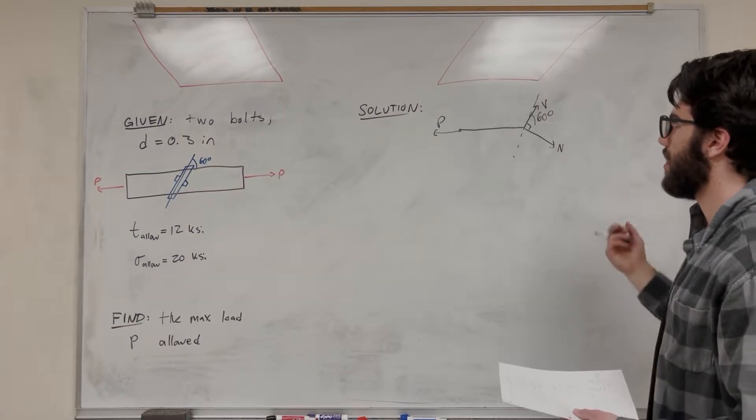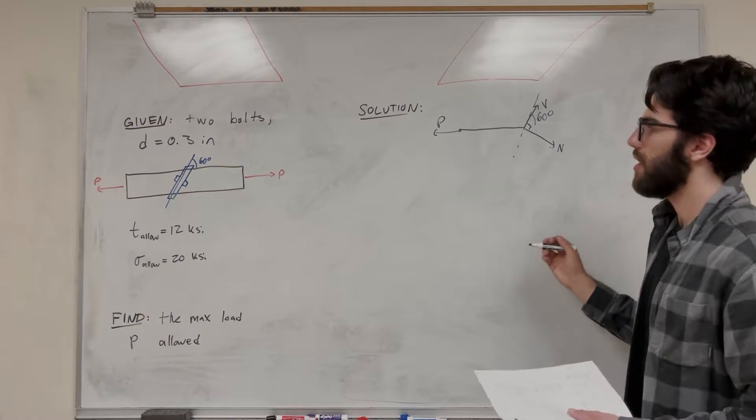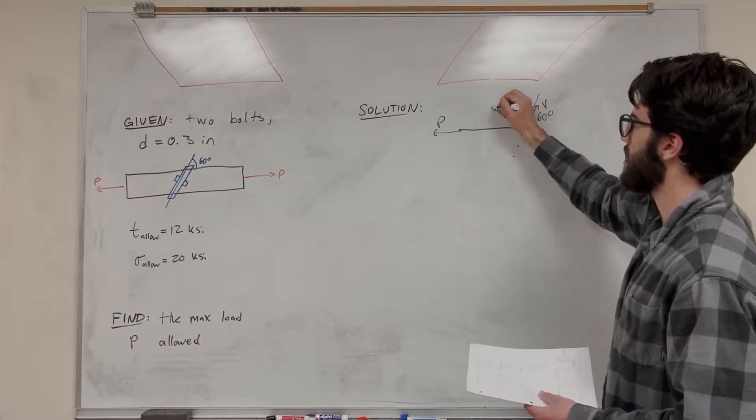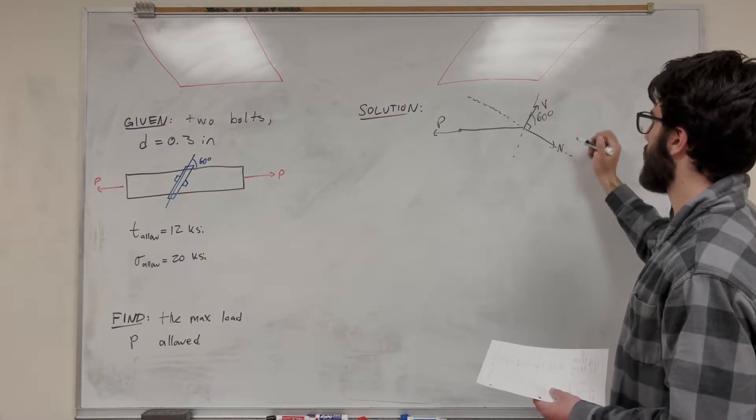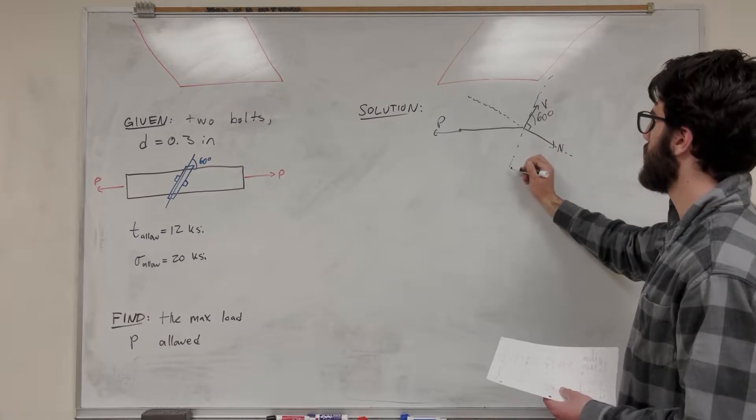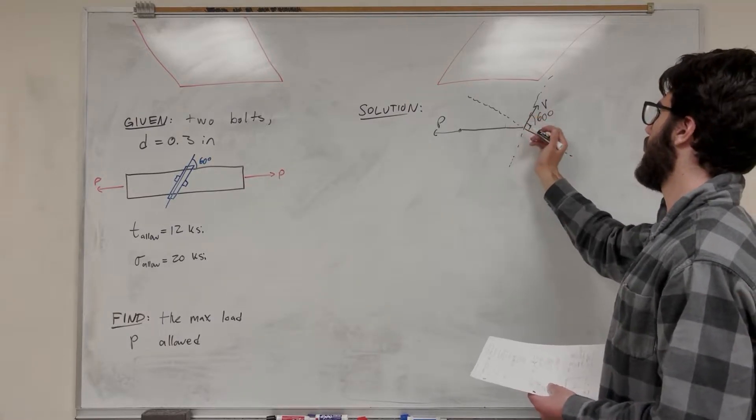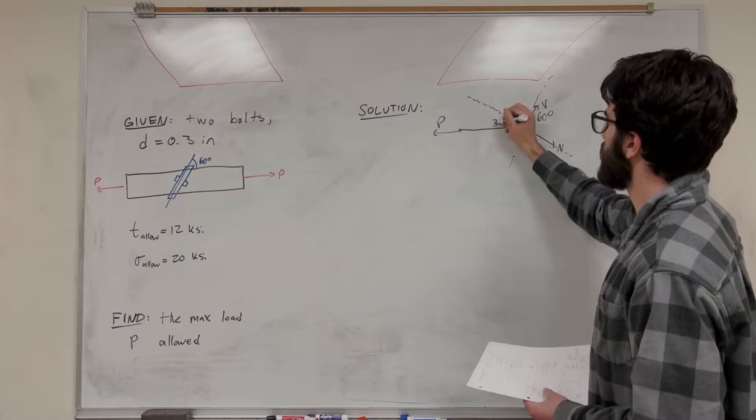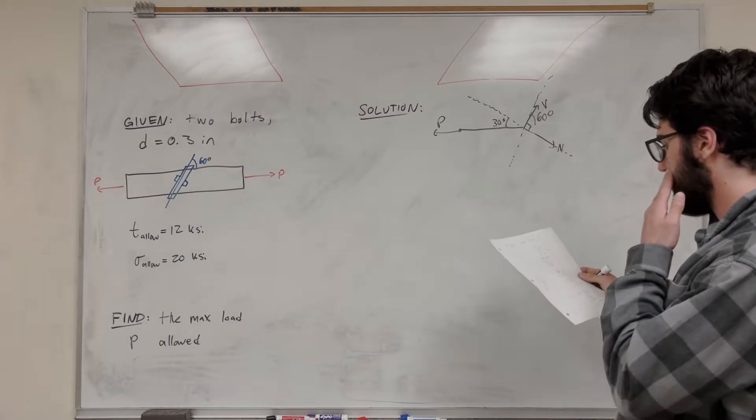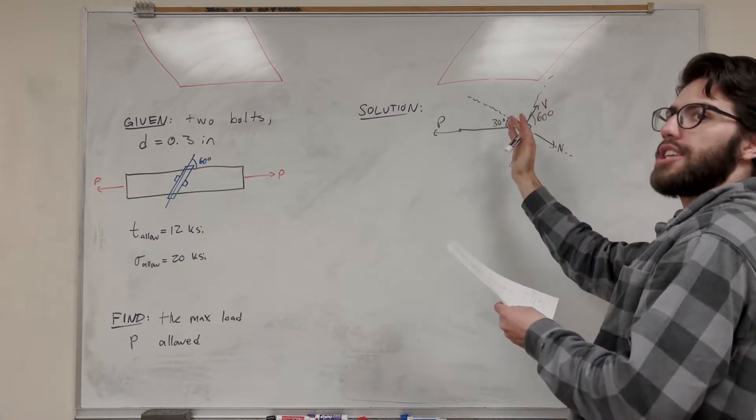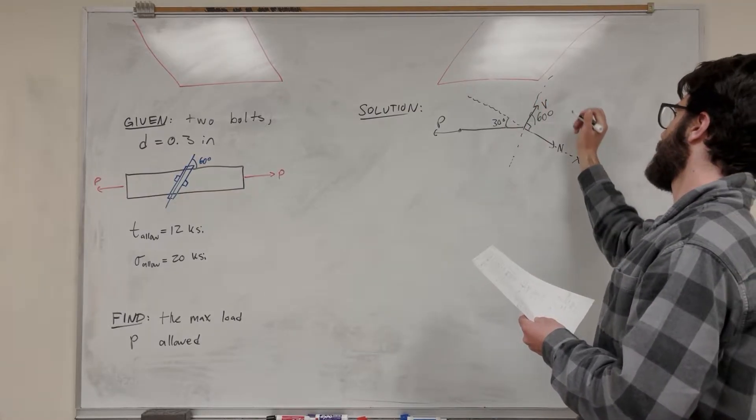So we want to find what these are. So what we can do instead of doing a sum of the forces x and sum of the forces y, we can split this up into normal and tangent coordinates. And then if you look at it instead, this is 30 degrees, what you can do instead is kind of shift that tilt, make this your x-axis, make this your y-axis.